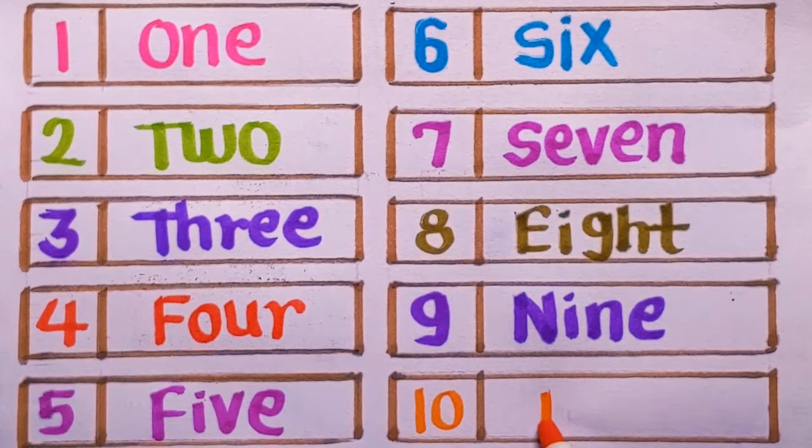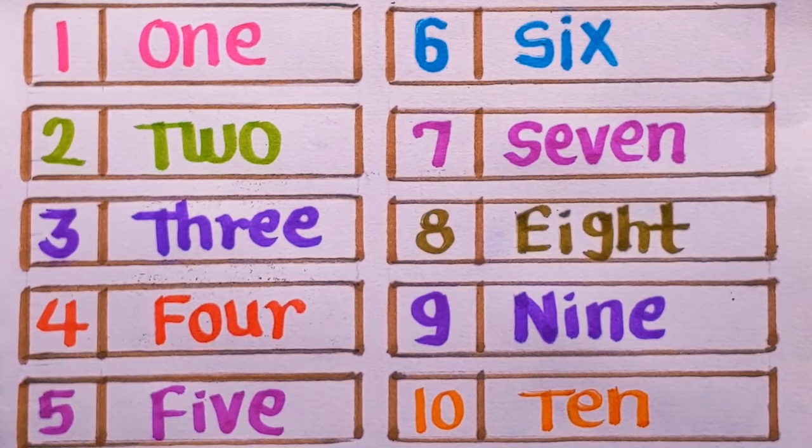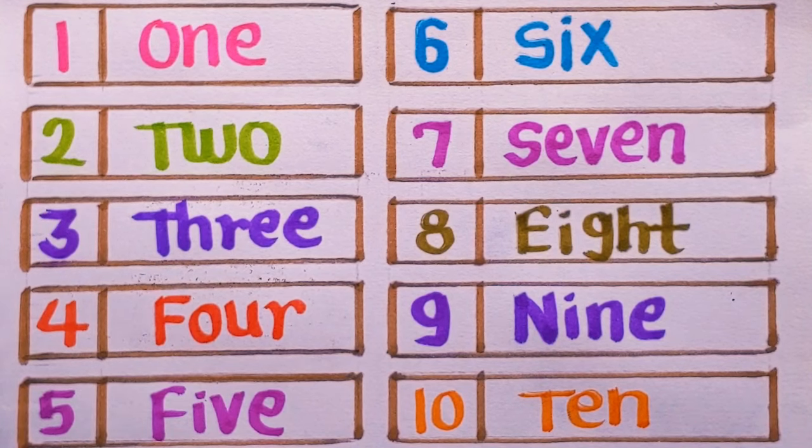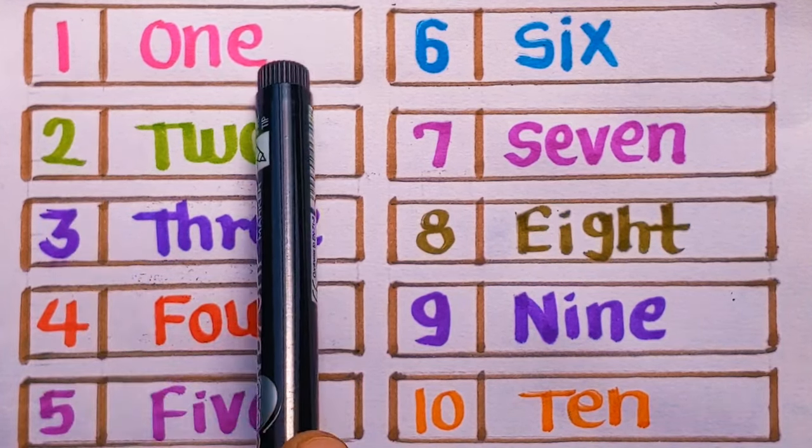Next number is ten, 1-0: T-E-N, ten, orange color. Now let's revise with me. One: O-N-E, one,